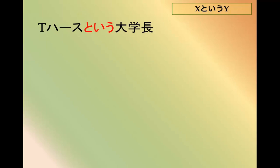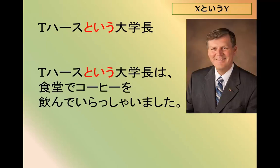For example, T-Haas to you daigakucho — a college president named T-Haas. You can use it in a sentence: T-Haas to you daigakucho wa shokuro de kouhi wo nonde irashchai mashita — the university president named T-Haas was drinking coffee at the cafeteria.